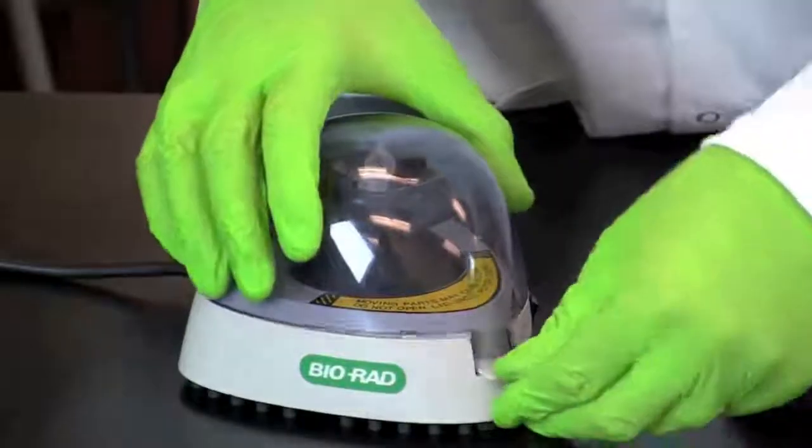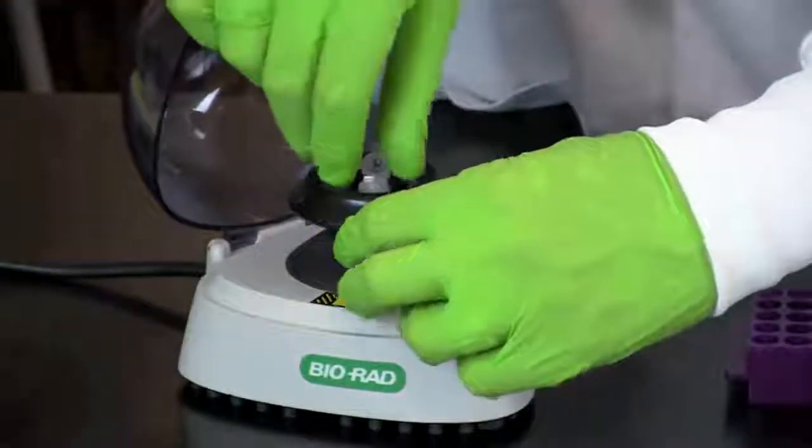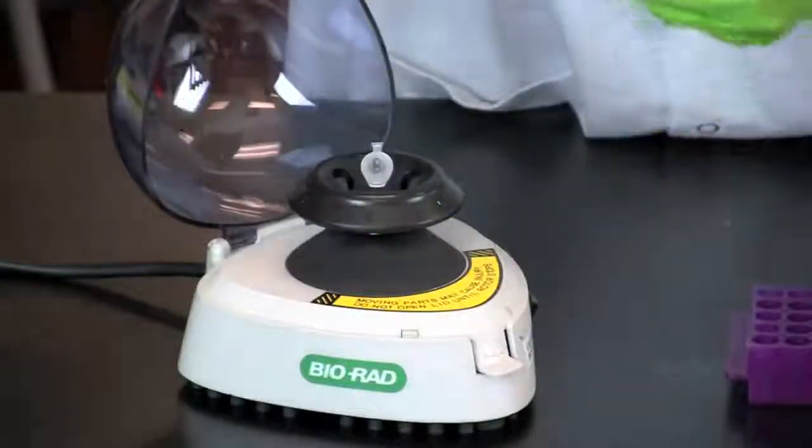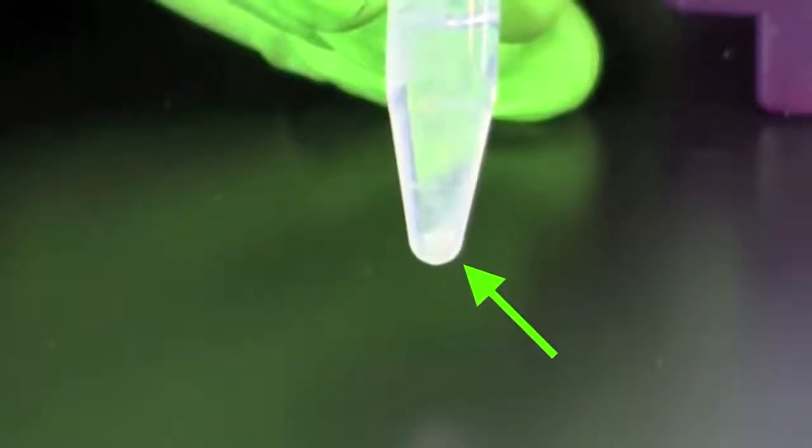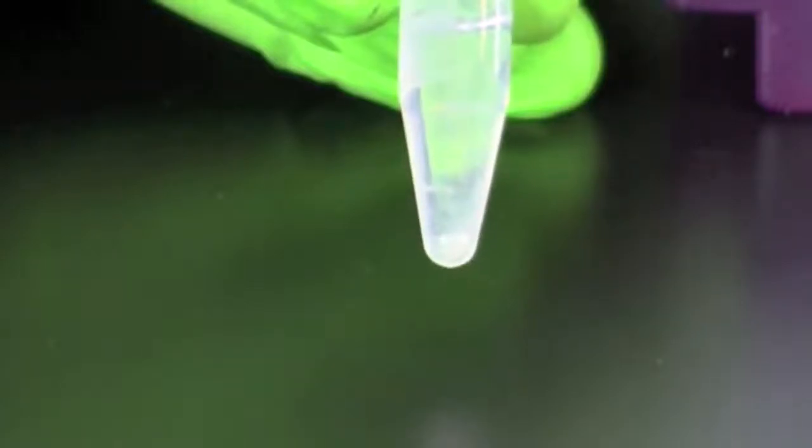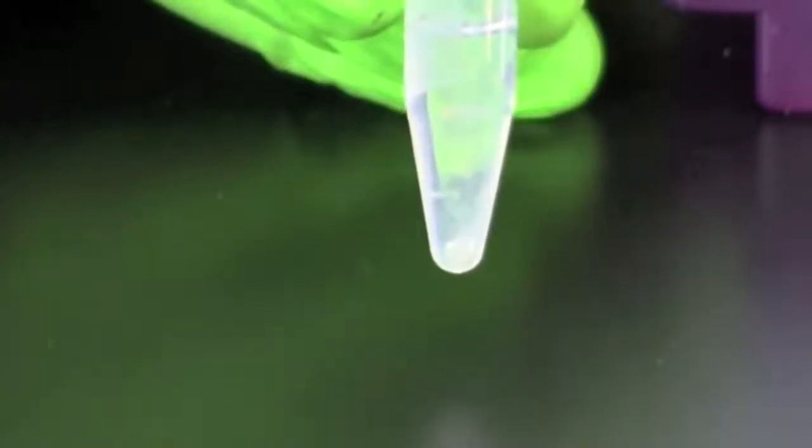Locate the cell pellet. The pellet should be white and be the size of a match head. If the pellet is smaller than a match head, remove the supernatant, add another 1 milliliter of mouth rinse to the same tube, and repeat the centrifugation.